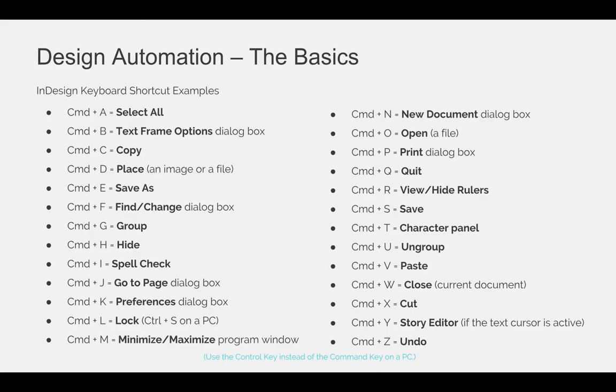For example, Command D in InDesign is place. If you want to add an image to your document and you don't want to move your cursor all the way up to the top left-hand corner, grab the File menu, and scroll down to Place — you can just hit Command D. But if you were in Photoshop, Command D would deselect whatever you have selected with the selection tool. I don't require students to memorize all the different keyboard shortcuts because they are different for all different programs, but find the ones that work for you and start applying them to increase the efficiency of your workflow.